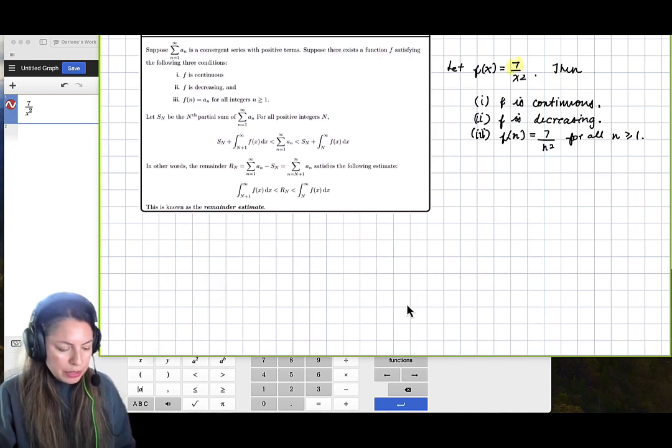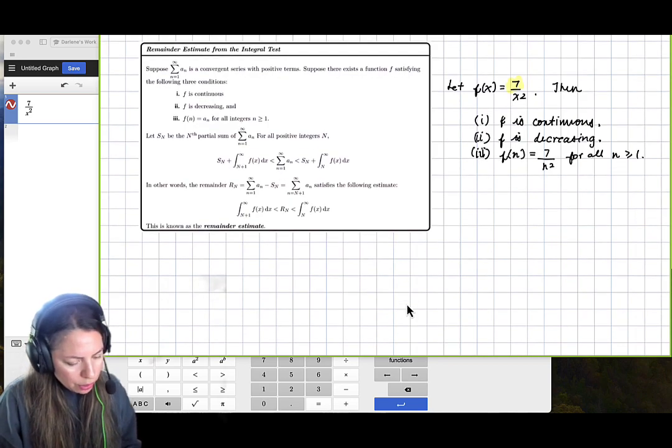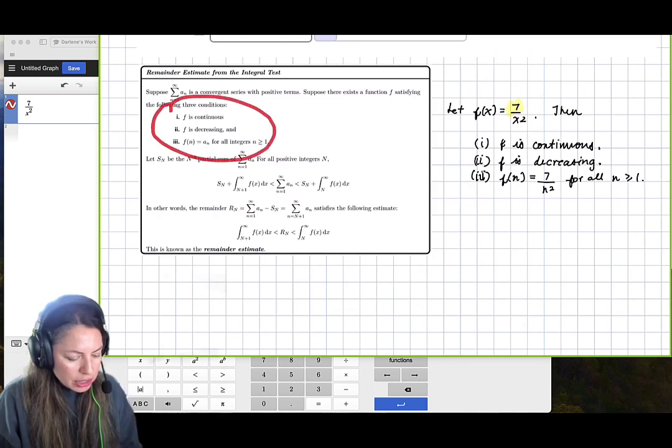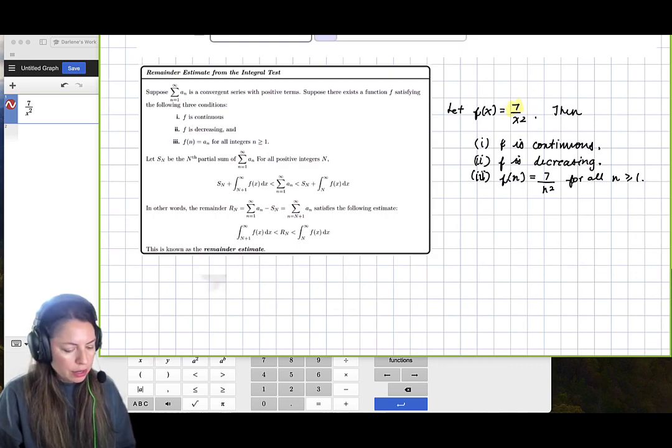So next we can go ahead and find that error. If we come back to our box here, we see that this series meets these three conditions. And therefore, we can go directly into finding our error.